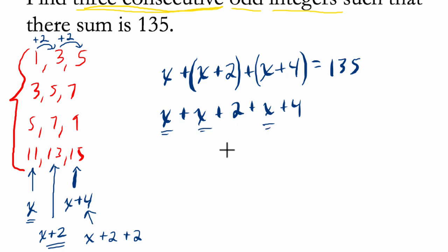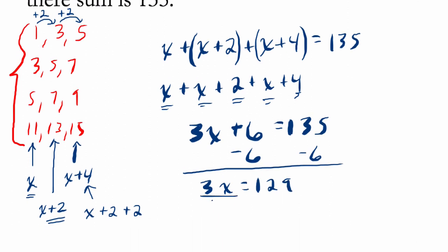Now we combine our x's, and there are three of them, and we combine our two and our four, that's six, and that's 135. So here we can solve this by subtracting six from both sides. So three x is 129, and we divide by three, and that's going to give us 43. X is 43.